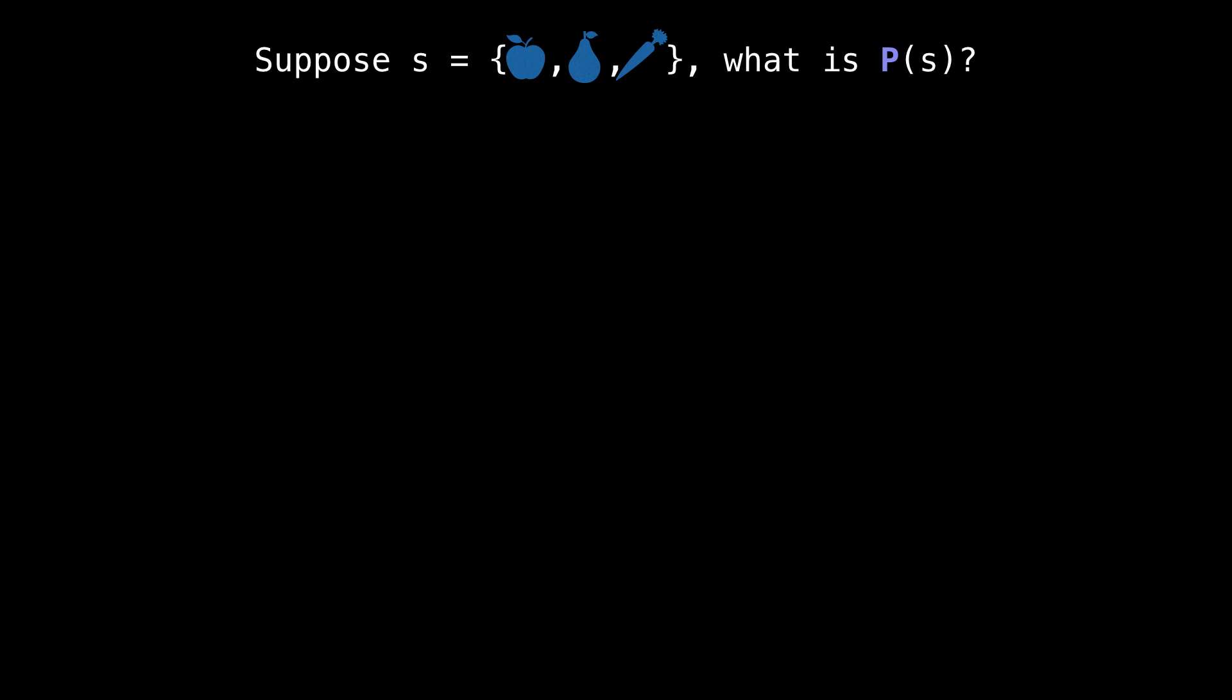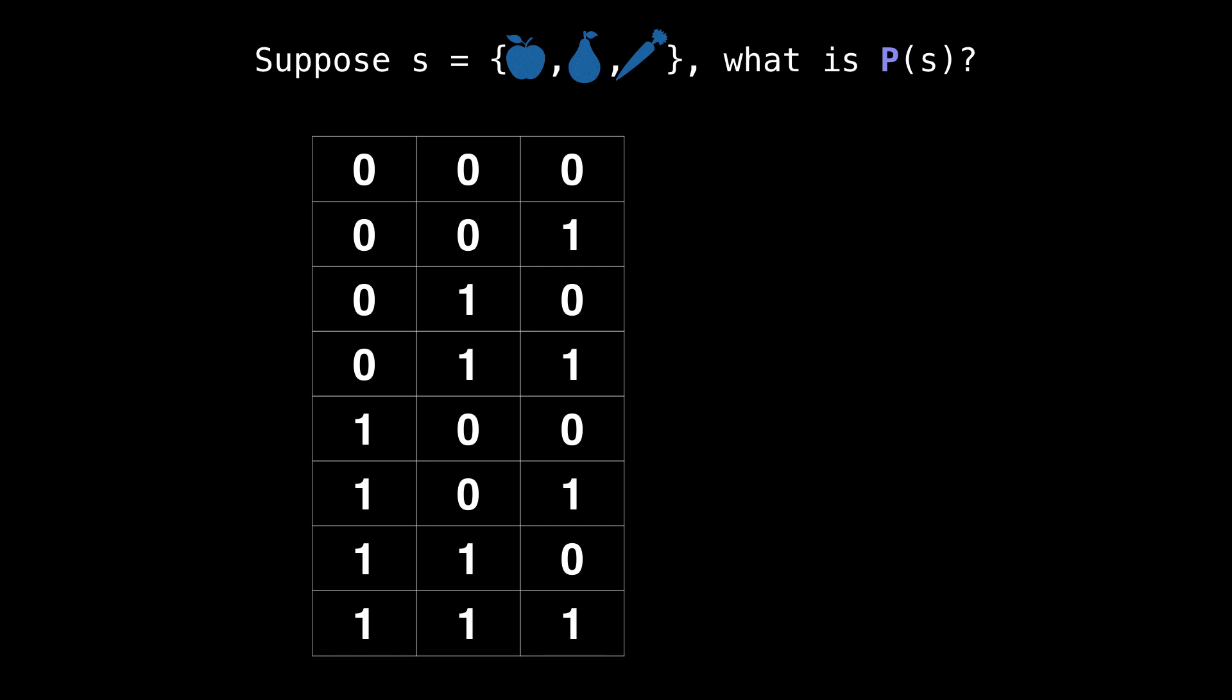Let's look at a situation where we want to generate the power set for a particular set. In this case, our set contains an apple, a pear and a carrot. We're going to use what we learned in the last couple slides to help ourselves. First, I'm going to generate all possible bit strings of length three, because we have three elements in our set.